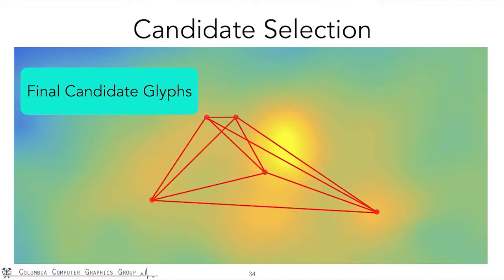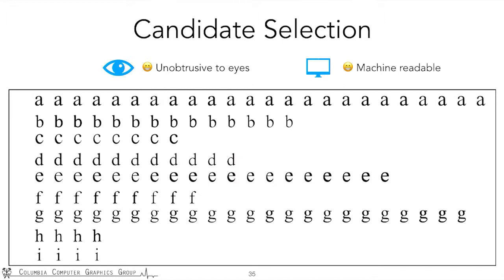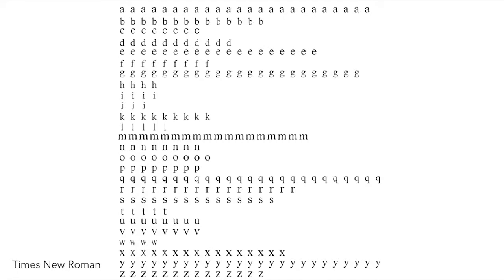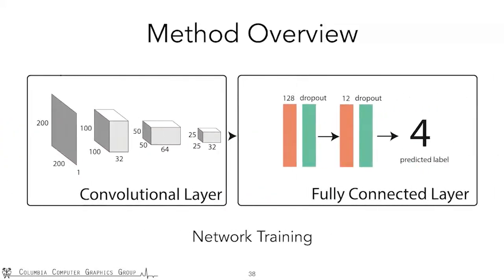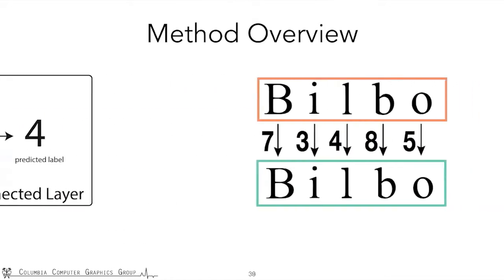We repeat this process for every character and store the perturbed glyphs in a database. Here is the result for Times New Roman. Notice that different characters may have different numbers of glyph variants — some characters like 'I' only have a few variants because they have a relatively simple shape. Here are the perturbed glyphs for all 26 English characters for Times New Roman. We then use both rendered images and real photos as training data to train a neural network classifier individually for each character. Given an image of a glyph, the neural network should identify which perturbed glyph it represents.